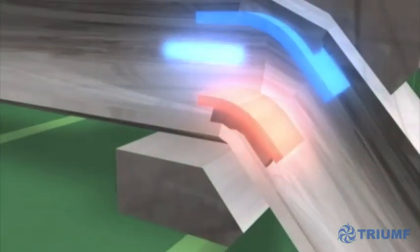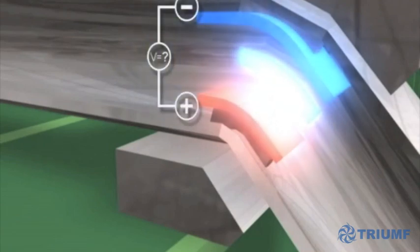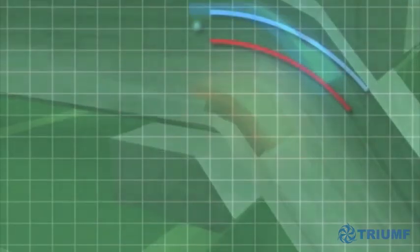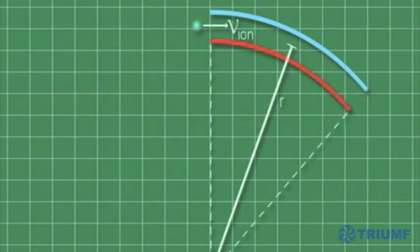Let's calculate the potential difference of the bender needed to steer the beam into the cyclotron. We'll need to know the ions' velocity, the radius of curvature of the plates, and their separation.